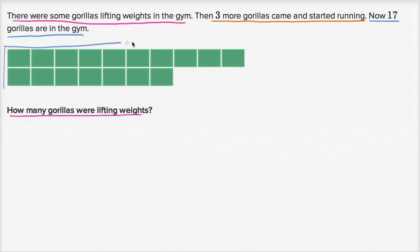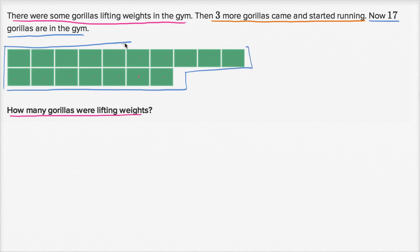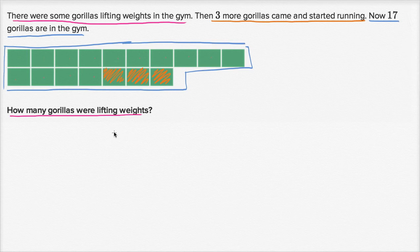So this is the 17 right over here — how many gorillas there are now in the gym. That's the 17. Now there were some gorillas in the gym, and three more came and started running. So maybe these are the three that came in and started running: 1, 2, 3. So how many were there to begin with? How many were there lifting weights? All the rest of these must have been there lifting weights.